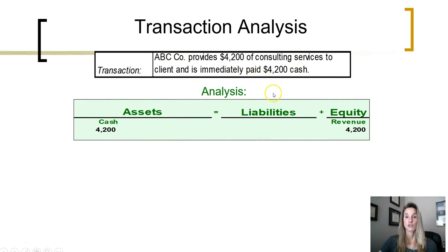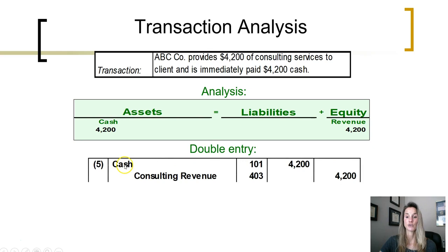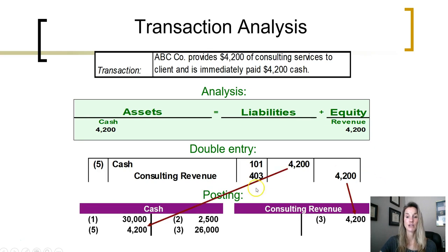ABC provides $4,200 of consulting services to a client and is immediately paid $4,200 in cash. Cash needs to be increased, so we debit cash to increase it. Services were provided, which means the company has earned revenue. Cash goes up with a debit; revenues are increased with a credit, so we credit the revenue to reflect that the company has earned more revenues. Journal entry is complete. We cause those account balances to change by posting the debit to the cash account to increase it and the credit to the revenue account to increase it, then post reference the account numbers back into the general journal.